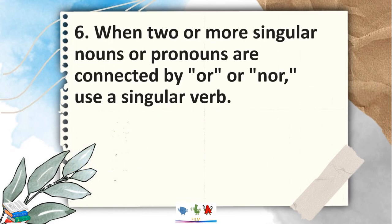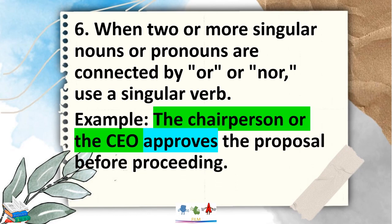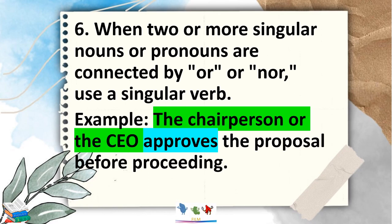Rule 6: when two or more singular nouns or pronouns are connected by 'or' or 'nor,' always use a singular verb. For example, 'The chairperson or the CEO approves the proposal before proceeding.' The nouns are 'chairperson' and 'CEO' joined by 'or.' Even if there are two nouns stated, because of the use of 'or,' we still use a singular verb, which is 'approves.'